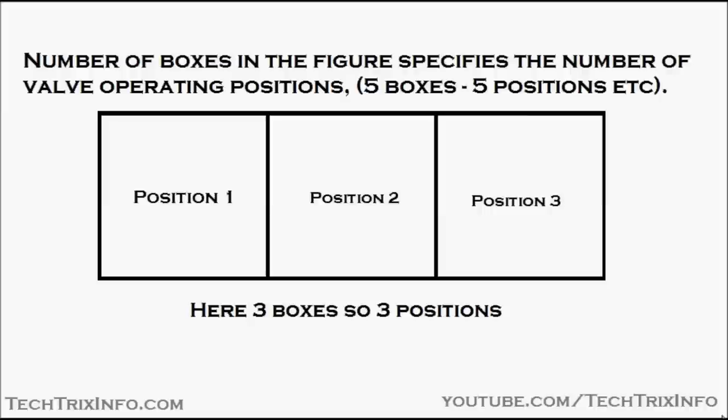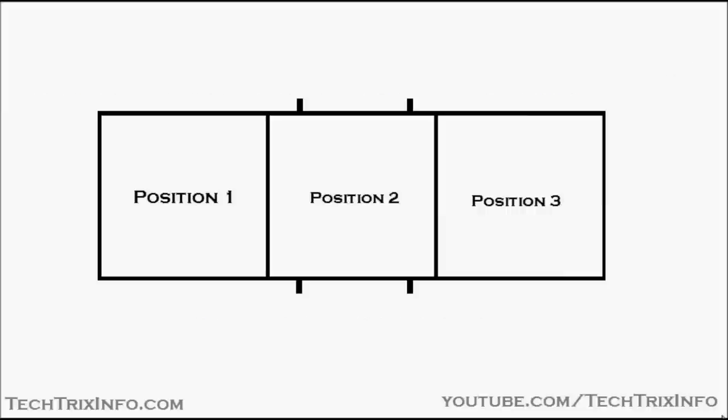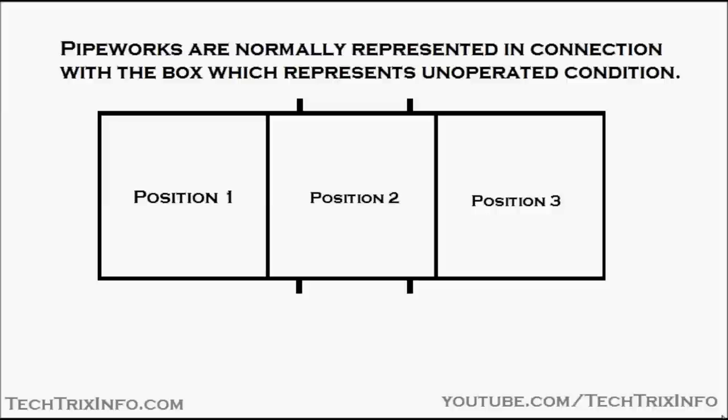The number of boxes in the figure specifically specifies the number of valve operating positions. If we have five boxes, we have five positions. Here we have three boxes, so it's a three-position valve. You can also see the pipework towards the control valve.